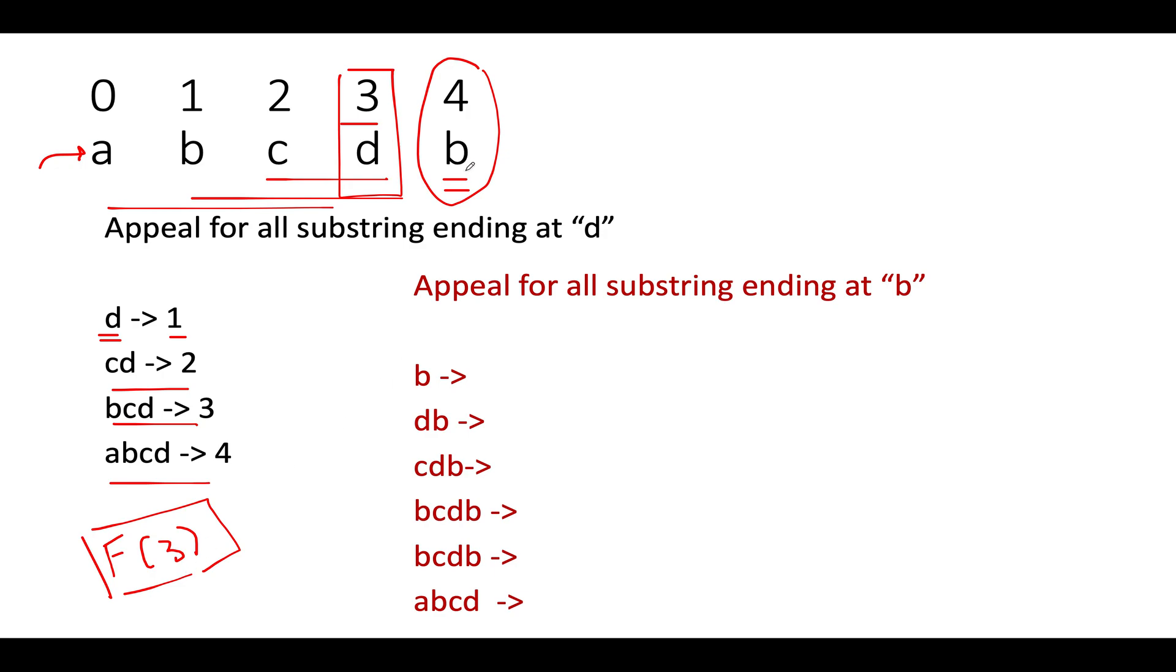Now we are interested in identifying the appeal for all the substrings ending at this particular b. So let's generate those substrings. The first one would be this singular b, the next one would be d-b, followed by c-d-b, then b-c-d-b, then a-b-c-d-b.